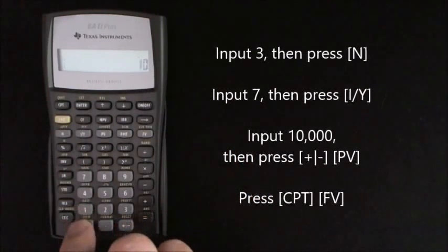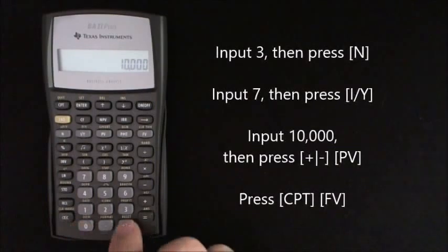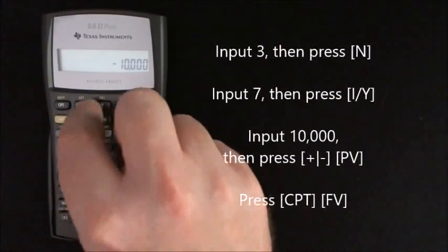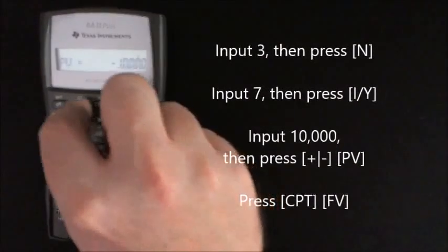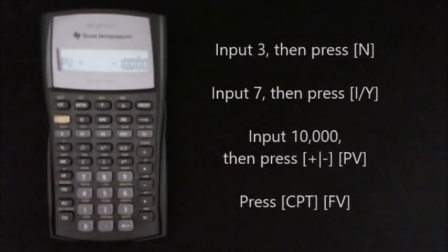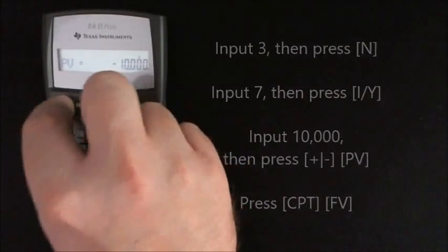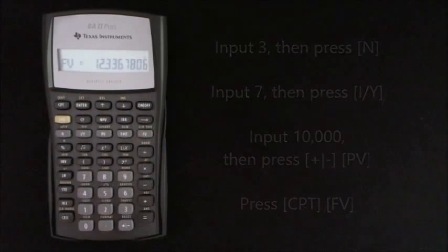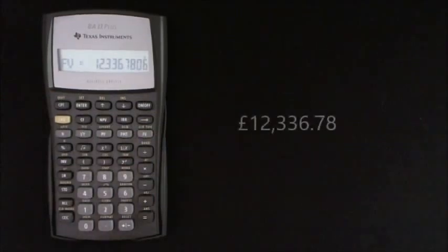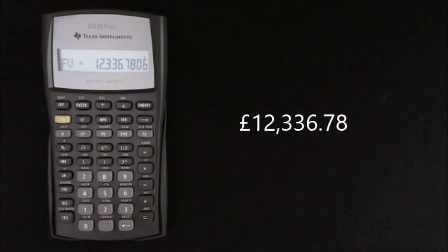And input 10,000, make that into a minus, and PV for the present value. And then press compute future value. And for the final time, the calculator should display 12,336.78 pence.